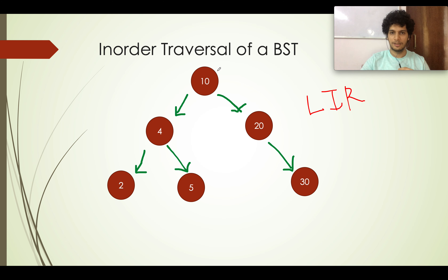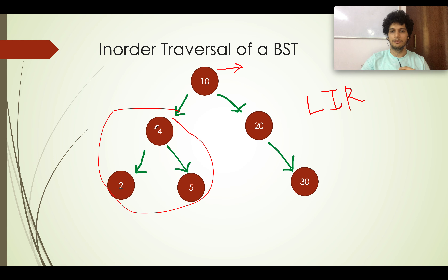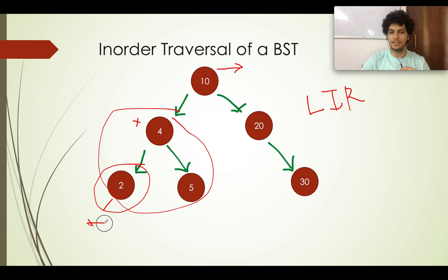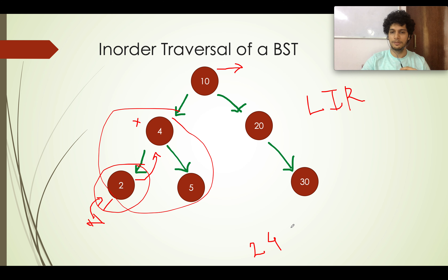You are at the root. You see there is a left subtree, so you move there by recursion. You come to 4, which again has a left child, so you go to 2. Node 2 has null as its left child, so you return and print 2 as the first element. Then you visit its right child — null — and return back. Then comes 4, and similarly you go to 5, visit its null left child, print 5, visit its null right child, and return.